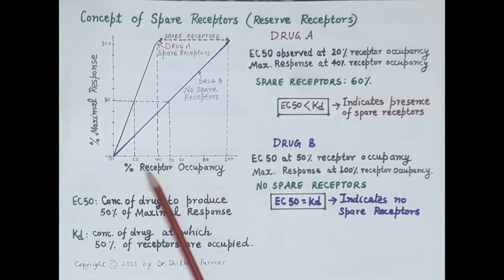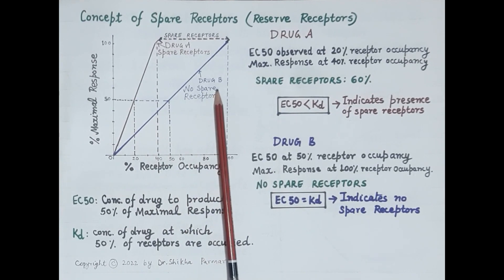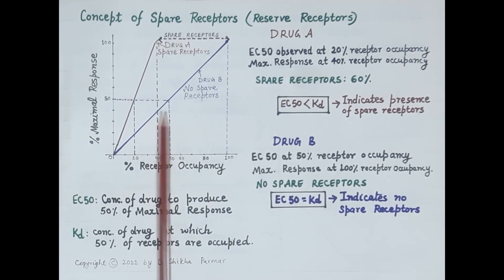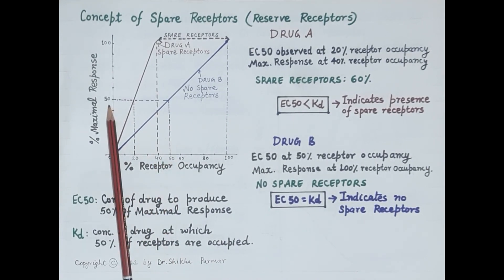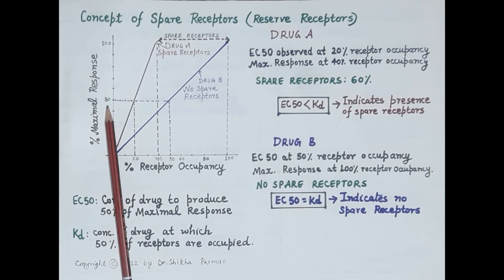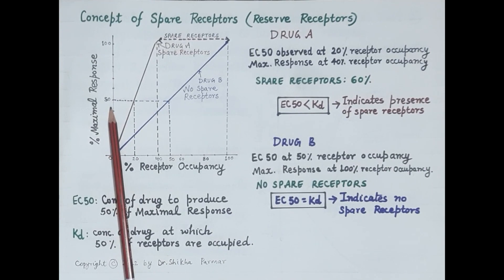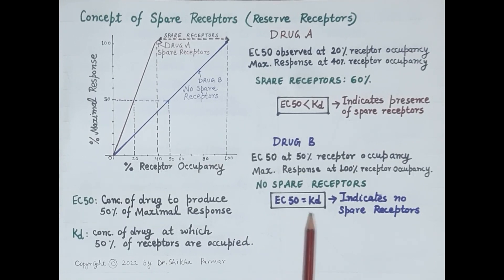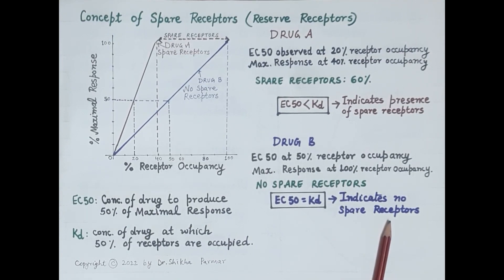For Drug B, 50% of the receptors are occupied to produce 50% of the maximal response. This 50% maximal response corresponds to EC50 of the drug, so for Drug B EC50 is equal to KD. When EC50 equals KD, it indicates that no spare receptors are present.